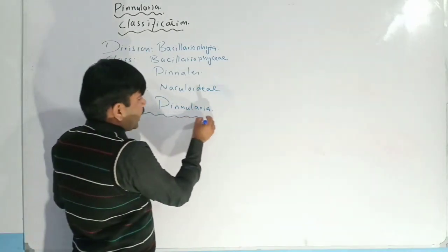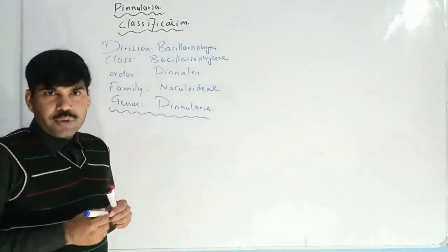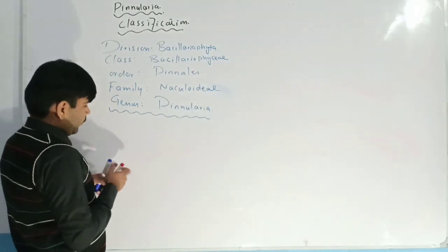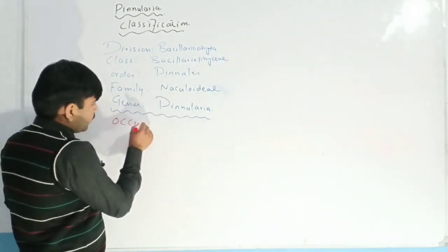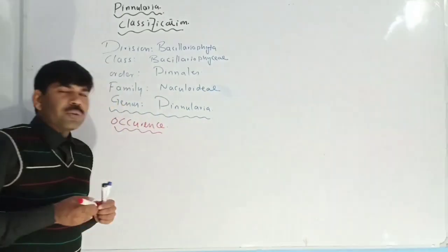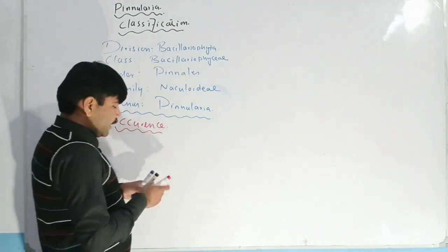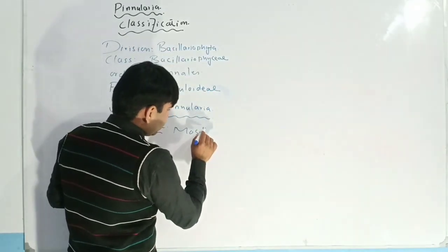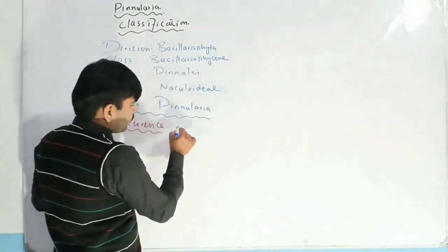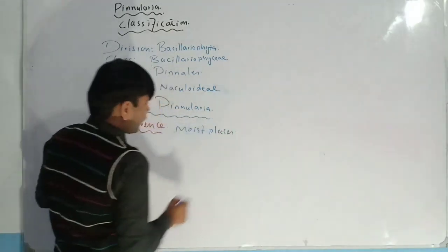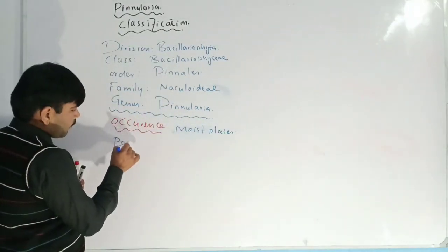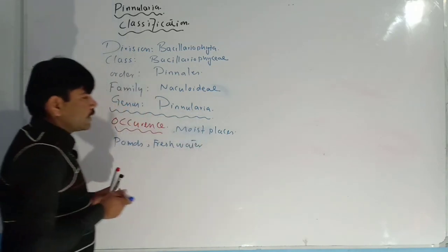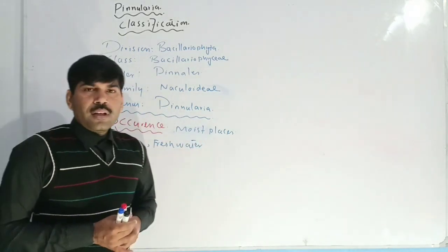So that was all about the classification. Now we are going to study about the general structure as well as occurrence. If we talk about the occurrence of Pinnularia, then we can say that these are present on moist places, as well as in ponds and fresh water. So these are the places where Pinnularia is found.